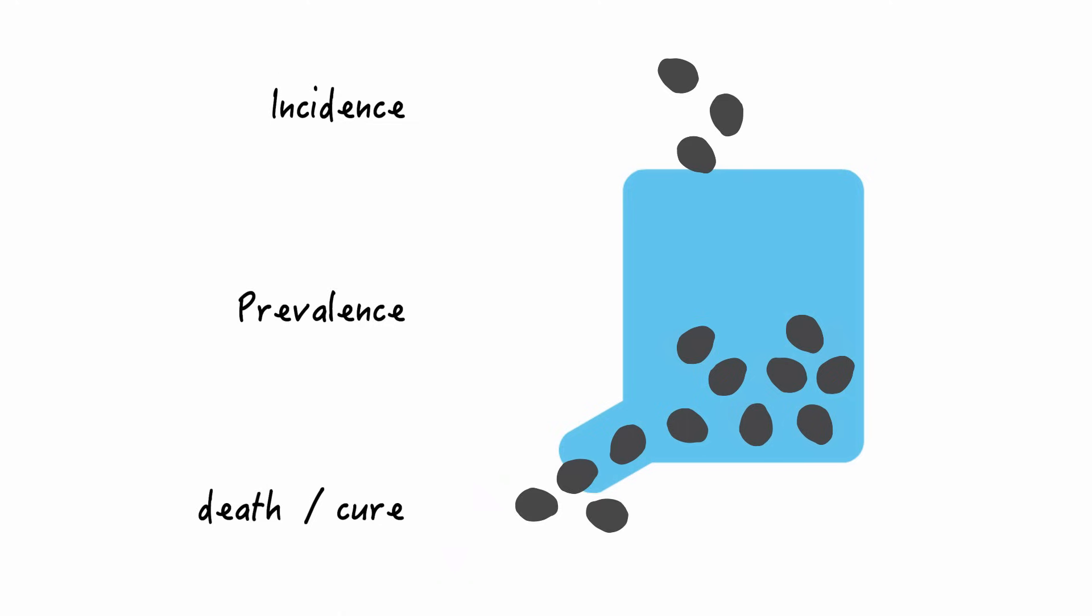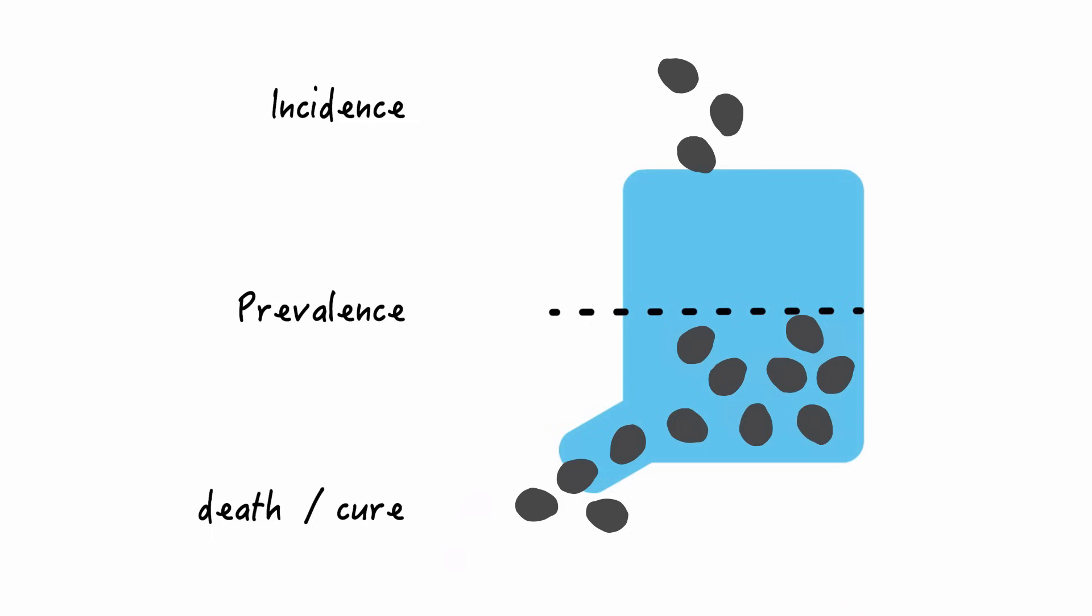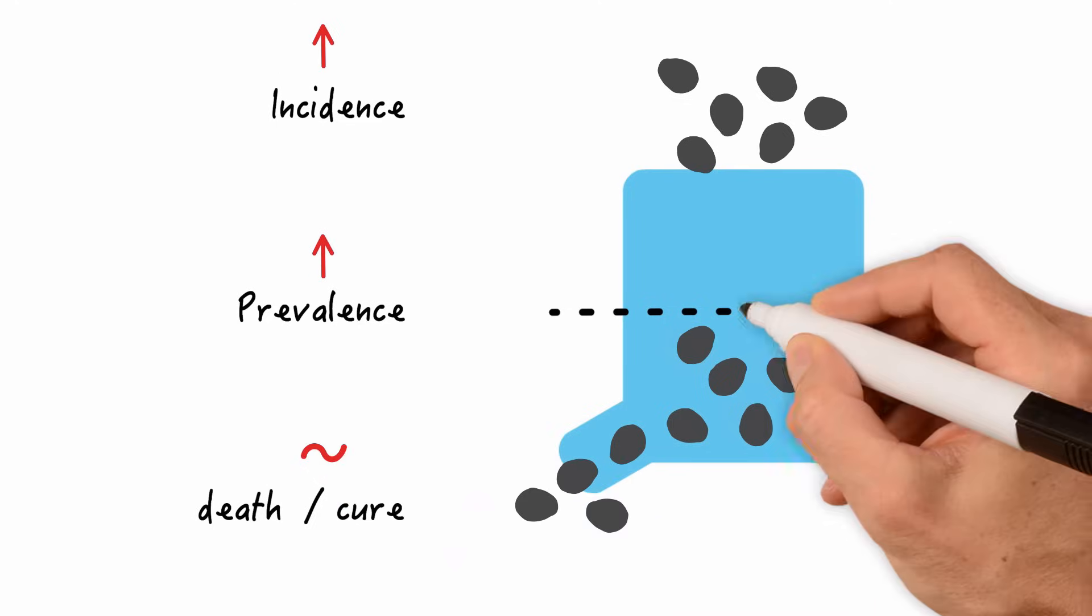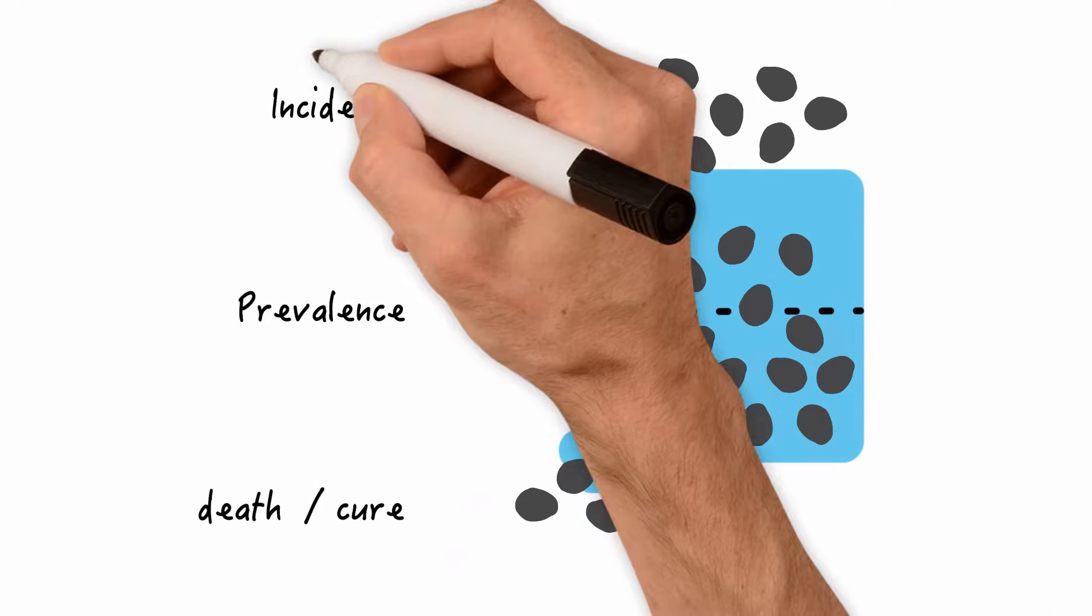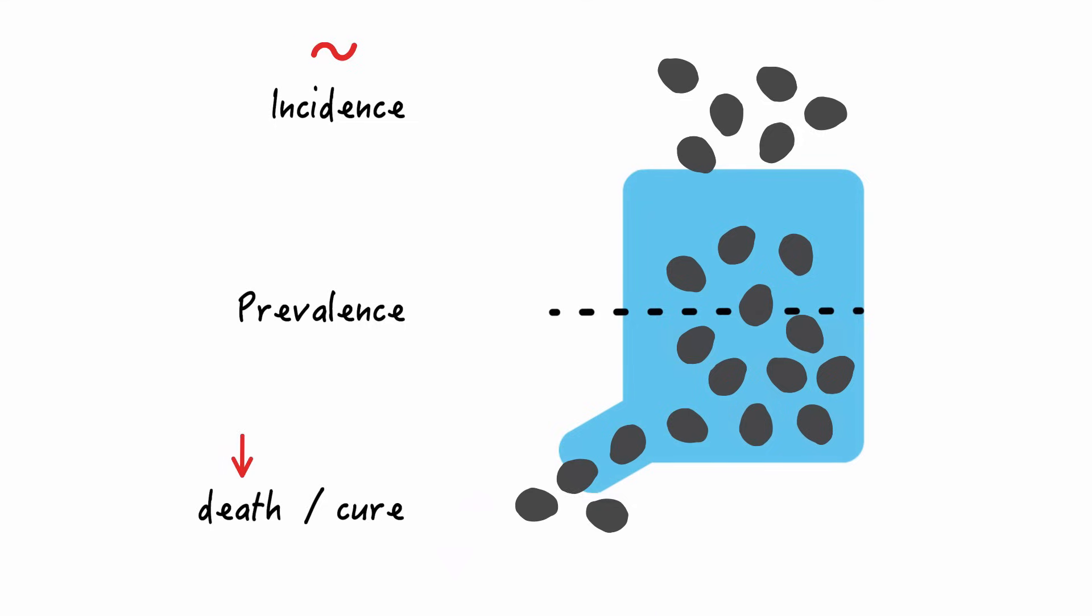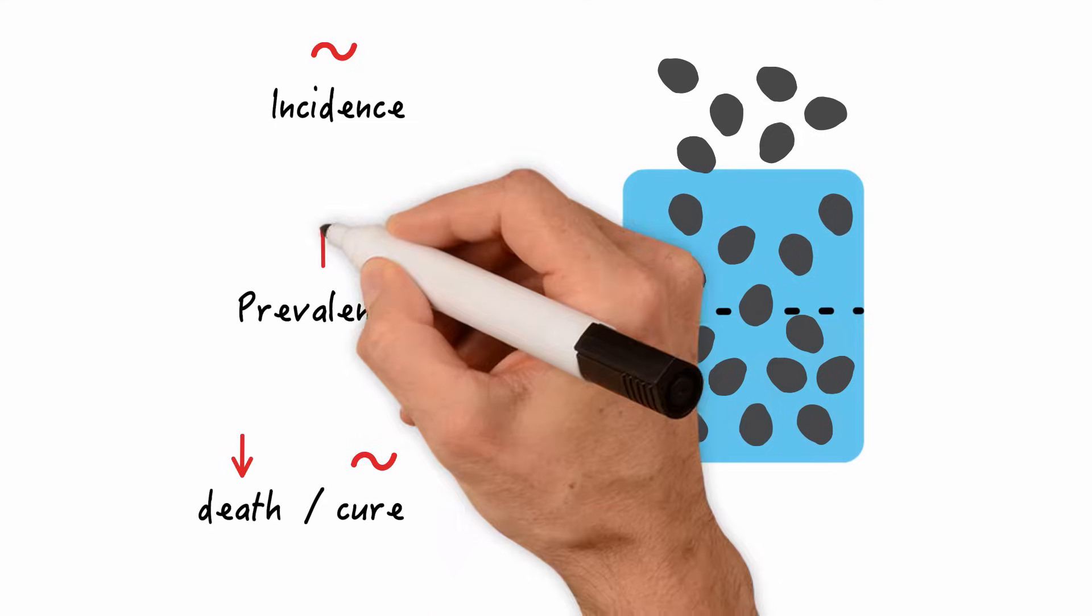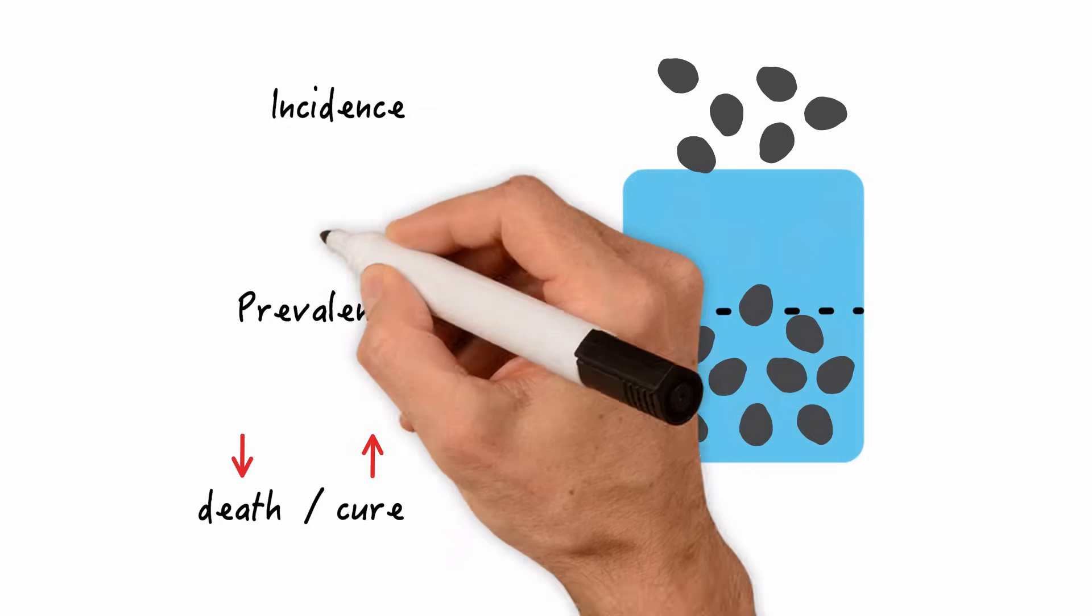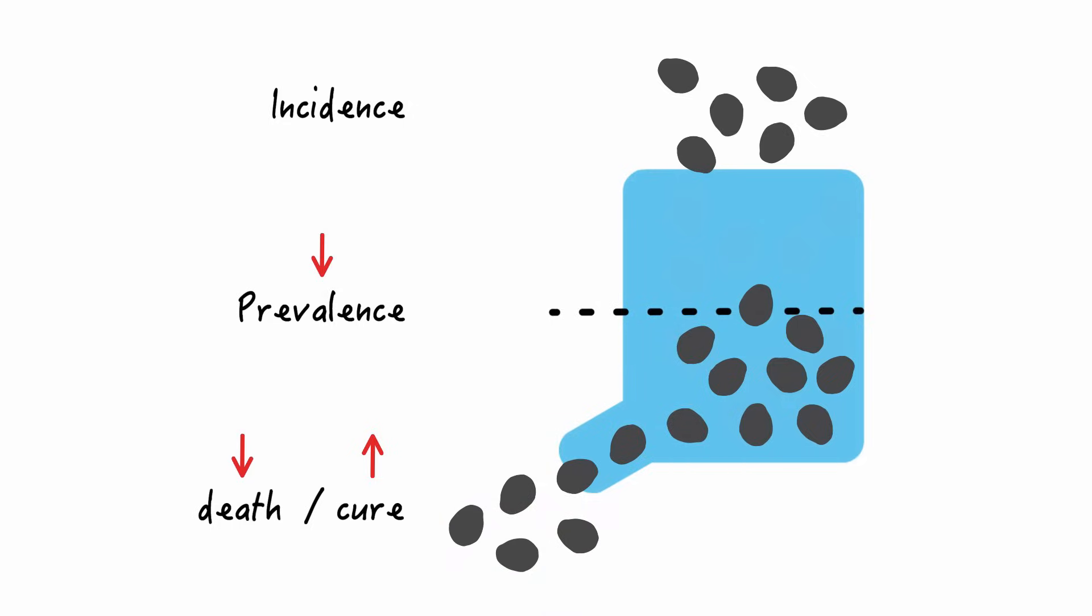Let's have a closer look. Let's say this is our baseline prevalence. Now what happens to prevalence if incidence goes up while death and cure stay the same? It has to go up right? What happens if incidence stays the same but death goes down while cure rate stays the same? It will go up since fewer pebbles will leave the vessel. What if death goes down and cure rate goes up? Well as you probably guessed correctly prevalence will decrease since more pebbles will leave the vessel.